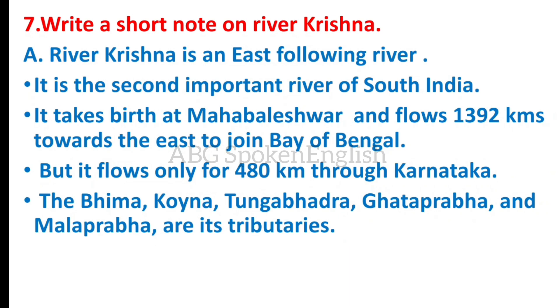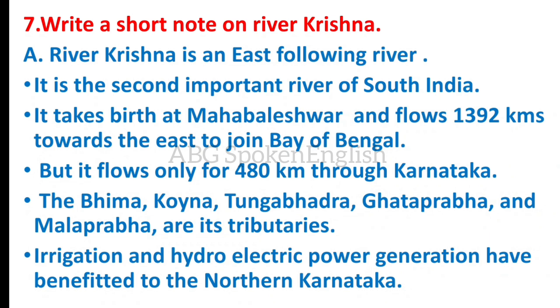The Bhima, Koina, Tungabhadra, Ghataprabha, and Valaprabha are tributaries of the Krishna river. These rivers' irrigation and hydro electrical power generation have benefited the northern Karnataka region.